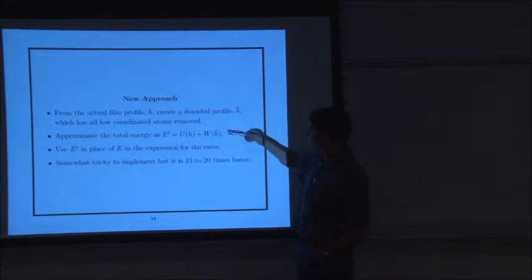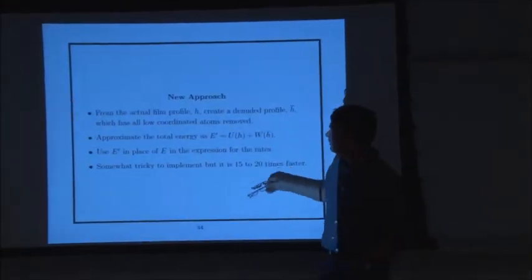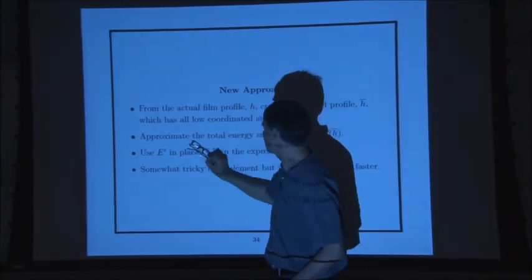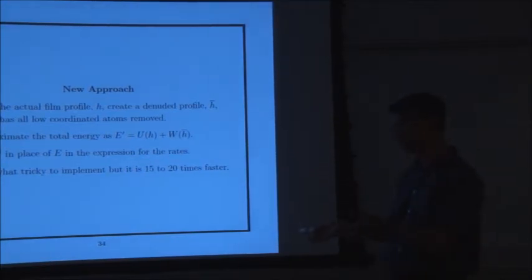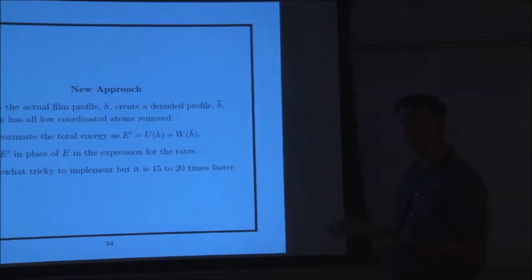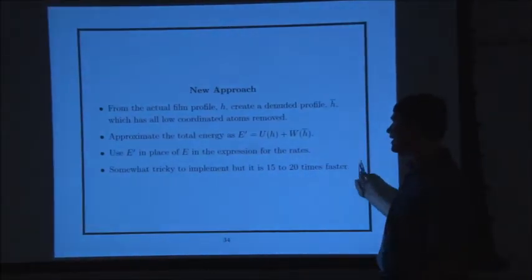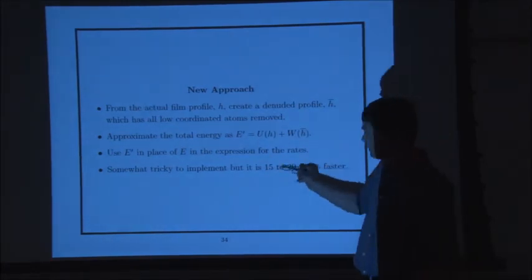The basic idea is: from the actual film profile, we create a denuded film profile called H-bar, removing low-coordinated atoms — roughly ad atoms and dimers. We redefine the energy of our system as having two parts: the surface energy associated with the original profile, plus the elastic energy of the denuded film profile. We ignore the elastic contribution of the ad atoms and dimers. The advantage is we replace this formulation into our kinetic Monte Carlo using this energy in place of the old energy, and the thermodynamic properties — specifically detailed balance — are preserved. The result: it can be 15 to 20 times faster.